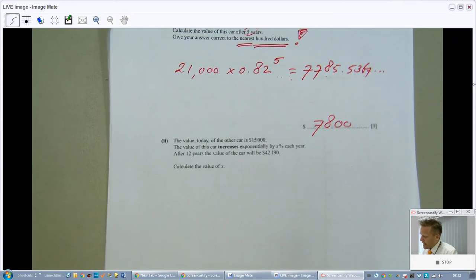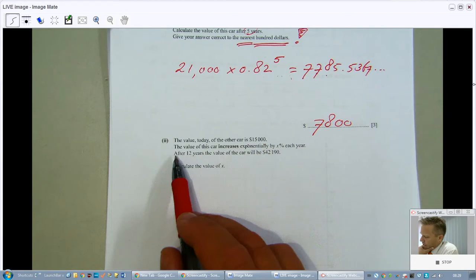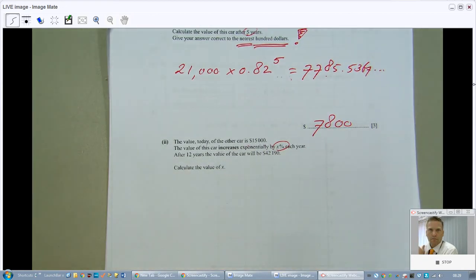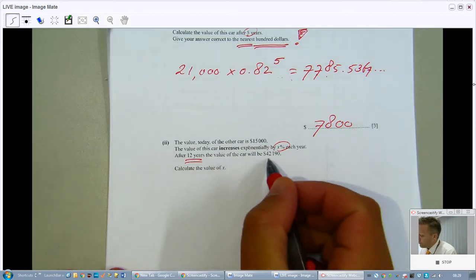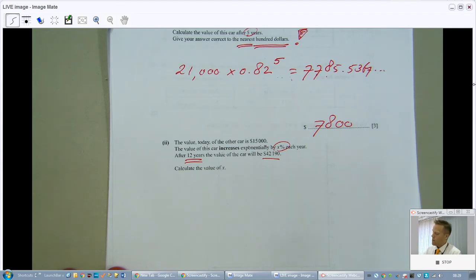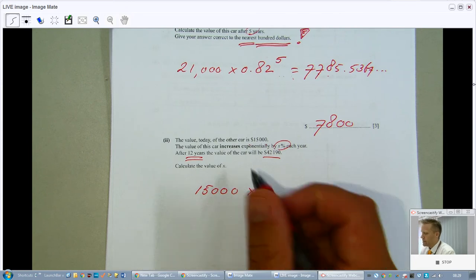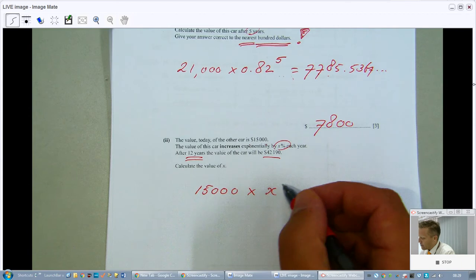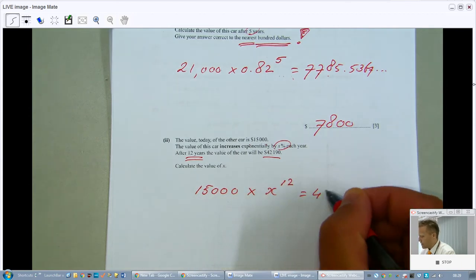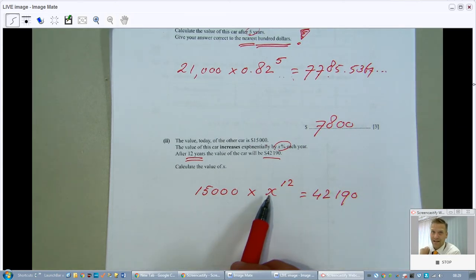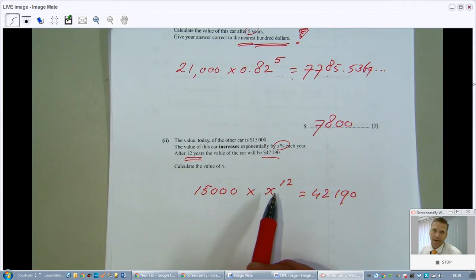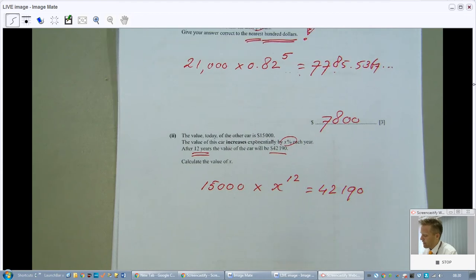But he has two cars, Thomas. And the value today of the other car is $15,000. And the value of this car increases exponentially by X percent per year. Never going to happen. A car will never increase its value. But okay. After 12 years, the value of the car will be $42,190. Calculate the value of X. Well, this is how I do it. It's worth $15,000 now. And normally, I would times it by the percentage. I'm just going to say X now to the power of 12. And it's worth now $42,190. But I'm telling myself this X, because it increases, will give me an answer like 1.01, for instance. That means 101% of the original. So, that is an increase of 1%.